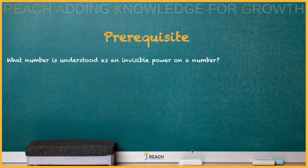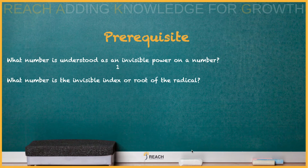What number is understood as an invisible power on a number? For example, with five, there's an invisible power — what is that number? Similarly, when we say square root, what is that invisible index or root of the radical?